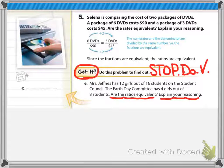Last is our example 5, and then you're going to try got it on your own. So example 5, Selena is comparing the cost of two packages of DVDs. One package of 6 costs $90, and a package of 3 costs $45. So she wants to know is there a better deal or are they the same, and you need to be able to explain your reasoning.